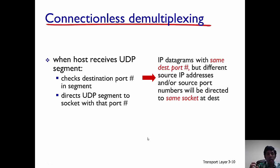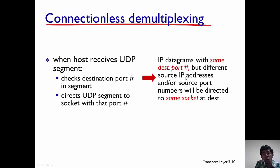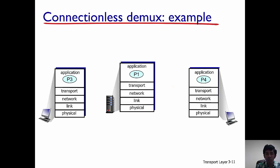When a host receives a UDP segment — UDP being a connectionless protocol at the transport layer — it checks the destination port in the segment and uses that destination port to direct the UDP segment to the appropriate socket. Importantly, if IP datagrams have the same destination port but different source IP addresses or source ports, UDP still directs them to the same socket. UDP only uses the destination port to determine which socket the segment should be delivered to.